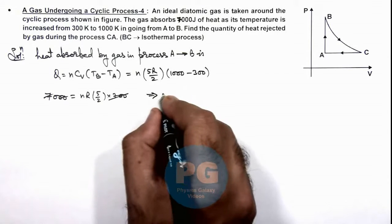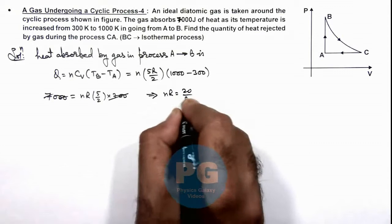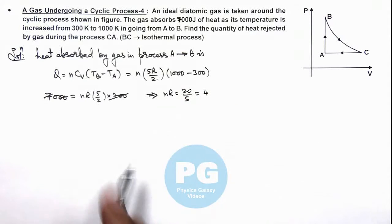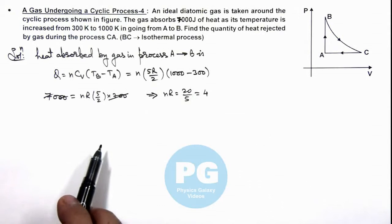On simplifying, this 700 gets cancelled out, and the value of nR is equal to 20/5, that is equal to 4. So we have got the product of number of moles and gas constant which is equal to 4.